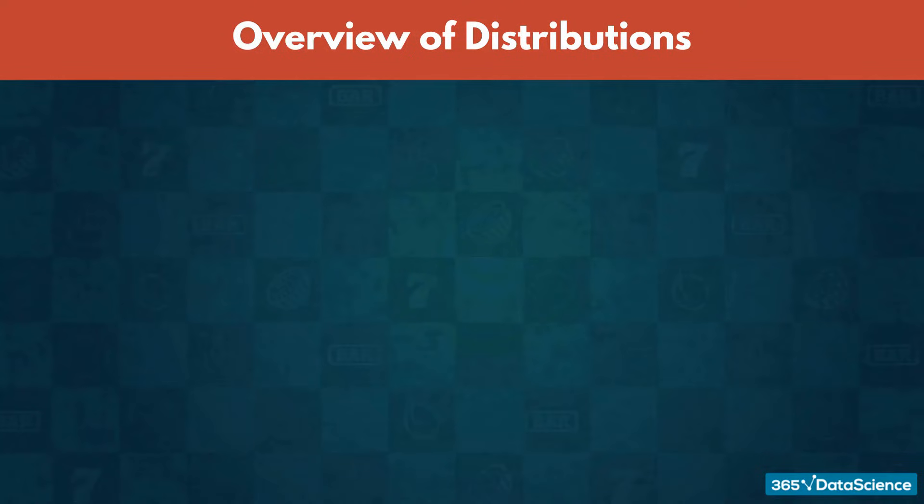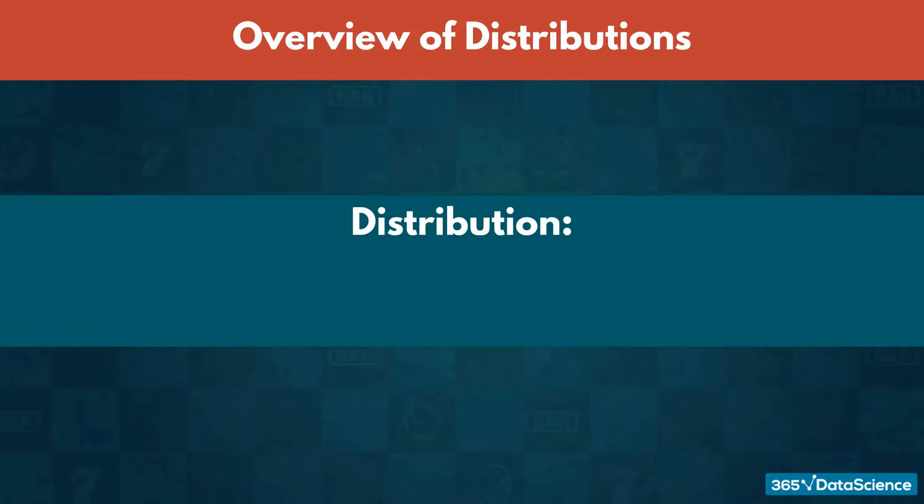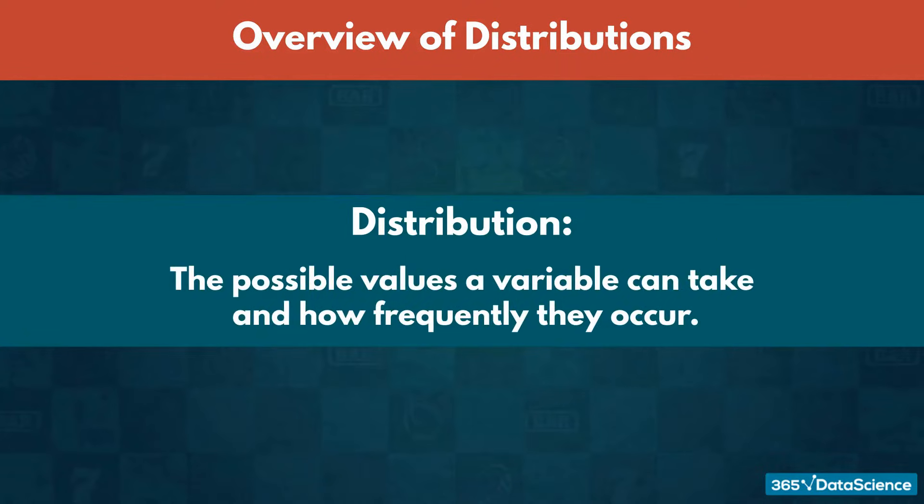This lecture is going to serve as an overview of what a probability distribution is and what some of its main characteristics are. Simply put, a distribution shows the possible values a variable can take and how frequently they occur.